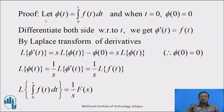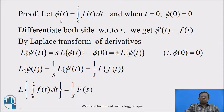Now, proof of this statement. Let us suppose phi of t equals integration with limit 0 to t of f of t dt. When we put t equal to 0 in this result, we get phi of 0 equal to 0. And when we differentiate this result with respect to t on both sides, the derivative of the right-hand side integration with respect to t gets cancelled, and we get phi dash of t equal to f of t.